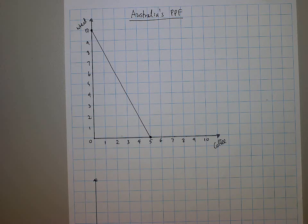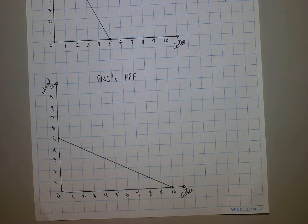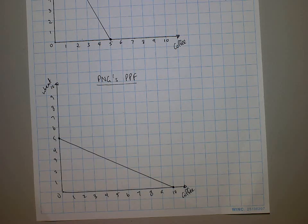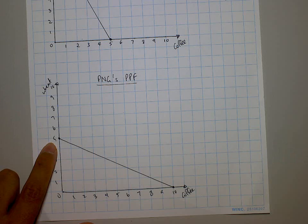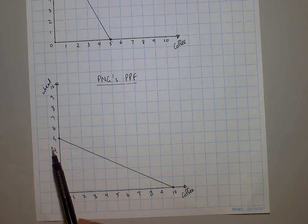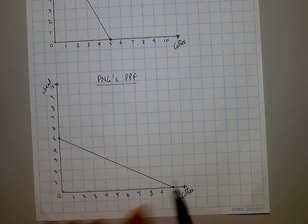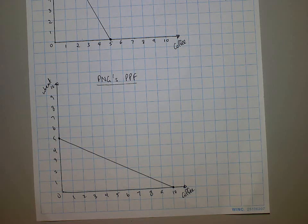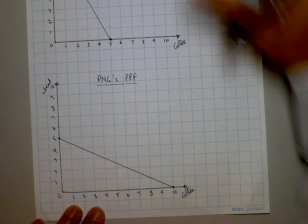Now have a go at drawing PNG's PPF. So this is Papua New Guinea's PPF — PNG producing 5 units of wheat and 10 units of coffee. You can see there's a difference between Australia's PPF and PNG's PPF — a difference in gradient or slope. You'll find that slope is important because it's linked to opportunity costs.